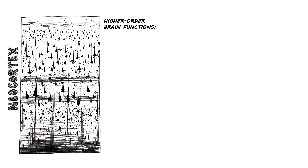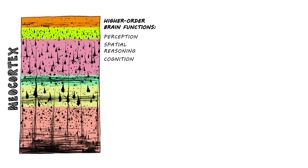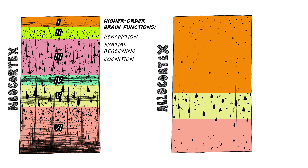The neocortex is involved in higher order brain function, including perception, spatial reasoning, and cognition. It has six layers, one to six. The allocortex has three or four — it's in the olfactory and hippocampal regions, so you can smell and remember more.